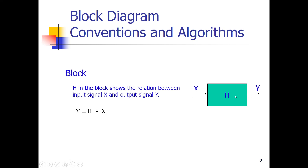Suppose H is a representation of an amplifier, then H could be a gain, let's say 3. So in this case, the signal X is amplified by a gain of 3, and will be the signal Y. So Y equals 3 times X. And in general, Y equals H times X.